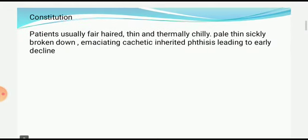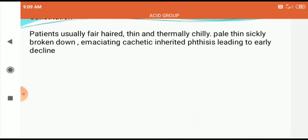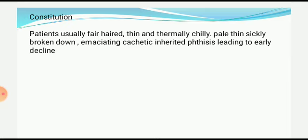Another consideration is constitution. Patients are usually fair-haired, thin, and thermally chilly. Fair-haired here means most of the time there are gray hairs. Phosphoric acid is the basic remedy for graying of hair in teenagers — if you don't remember anything specific for graying of hair in teenagers, give phosphoric acid. These patients are thin, lean, and really very cachetic, and they are thermally chilly — they feel cold and are really sensitive to cold. There is also inherited phthisis leading to early decline.